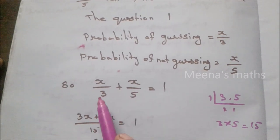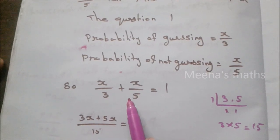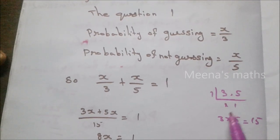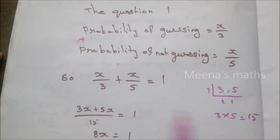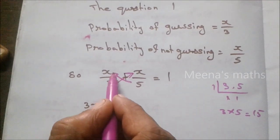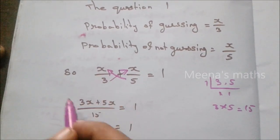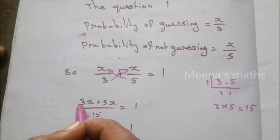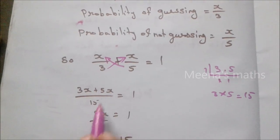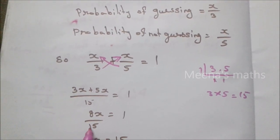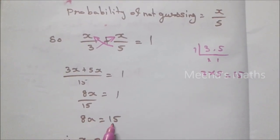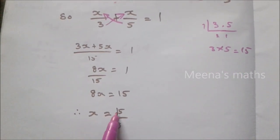To solve X by 3 plus X by 5 equals 1, find LCM of 3 and 5, which is 15. Cross multiplying: 5X plus 3X by 15 equals 1, giving 8X by 15 equals 1. Multiplying both sides by 15: 8X equals 15. Therefore, X equals 15 by 8.